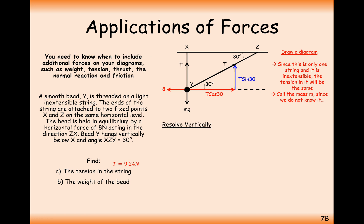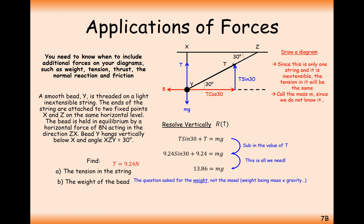Now we work out M by resolving vertically. We have two upward T forces — T sin 30 and the vertical T component — balancing the Mg force acting downwards. Calculating this gives Mg equal to 13.86 newtons, which is the weight of the bead. To find the mass you would divide by 9.8, but the weight of the bead is 13.86 newtons.